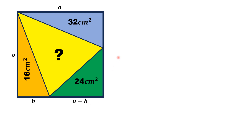Let the leg of the blue triangle be 'C', then this length is equal to a minus C. We know that the area of a triangle is equal to half times its base and height.